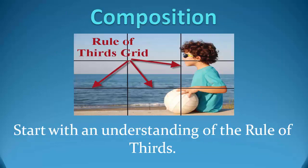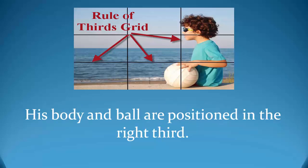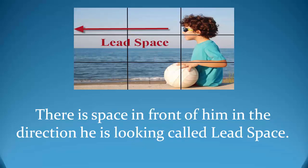Finally we are going to take a quick look at some composition tips as they apply to video. It's a big subject so I'll only be covering the first rule most people learn, and that is the rule of thirds. It is a simple concept where the frame of the shot is broken into a grid and the subjects are arranged according to that grid. Notice in the image on screen that the boy's eyes are aligned with the top third line. His body and the ball he is holding are in the right-hand third because he is looking to the left of the screen. This space between him and the left edge of the frame is called lead space, and it gives the audience a pleasing sense of space.